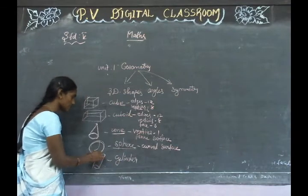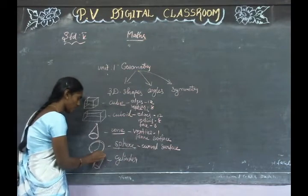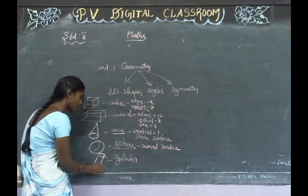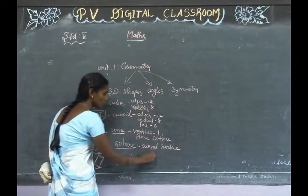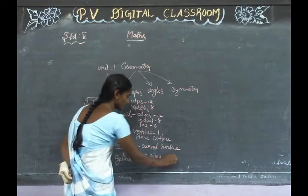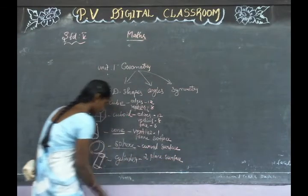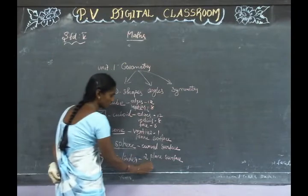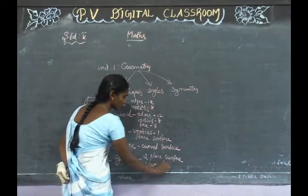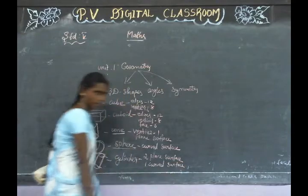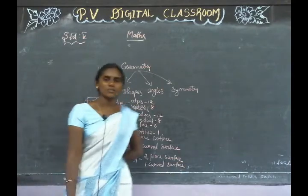Then next is cylinder. Cylinder has two plane surfaces and one curved surface. Now we have 3D shapes complete.